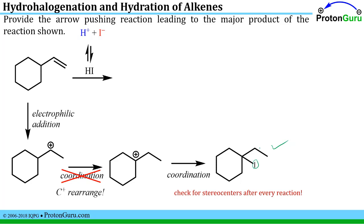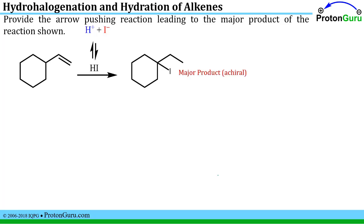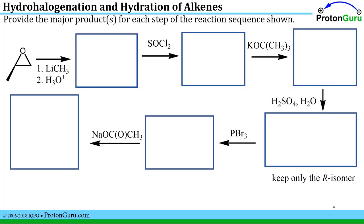Now we check for stereocenters. This is actually an achiral compound: although we have an iodide and an ethyl on this carbon, this side of the ring and this side of the ring are identical to one another, so our final product is achiral. As we learn more reactions, we can string them together into longer reaction sequences.